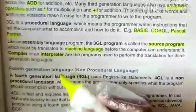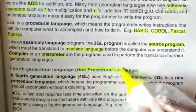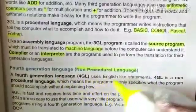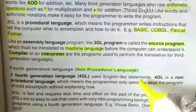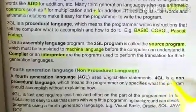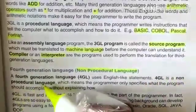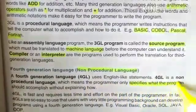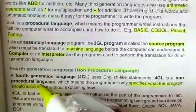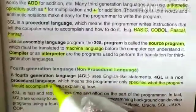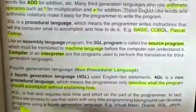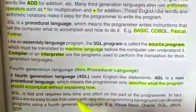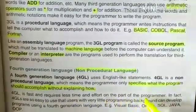Fourth Generation Language (4GL) is a non-procedural language. A 4GL uses English-like statements. It is non-procedural, which means the programmer only specifies what the program should accomplish without explaining how. 4GL is fast and requires less time and effort on the part of the programmer.